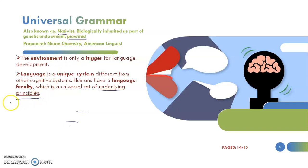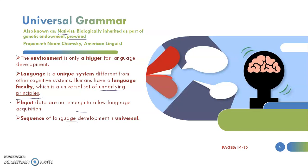We have a set of universal underlying principles, which is why it is called universal grammar. Input data alone are not enough to allow language acquisition — for instance, if someone does not have the underlying language ability, no matter how much input they receive, they won't be able to acquire language. However, if they are normal human beings with this language faculty, the input will be sufficient. There is also a universal sequence of language development among all human beings.